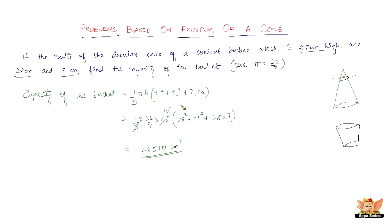What you need to know here is that you must first be able to identify that what we're talking about is a frustum — that's the main point. The word 'frustum' is not used in the problem, so you need to learn how to identify it. 'Radii' means plural — more than one radius — and if 'conical' appears in the same sentence, we're definitely talking about a frustum. Capacity means volume.